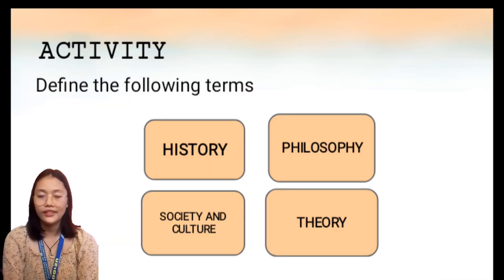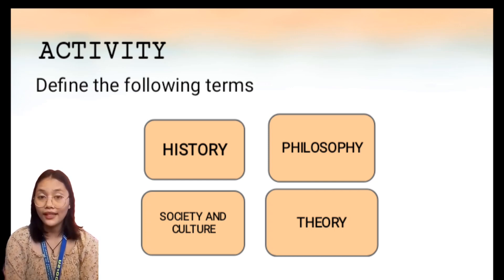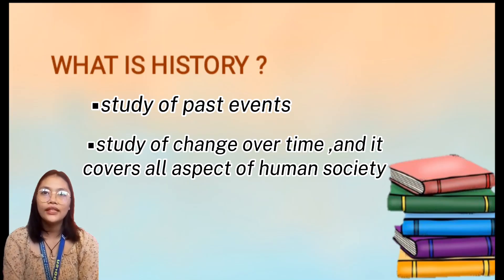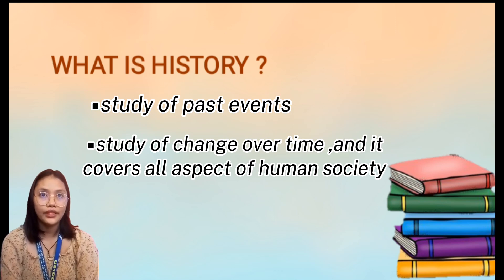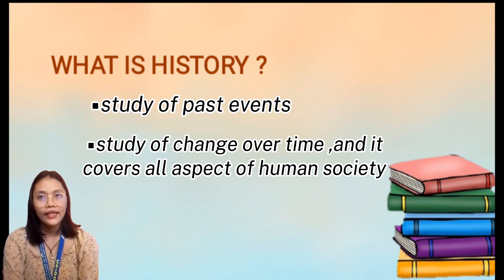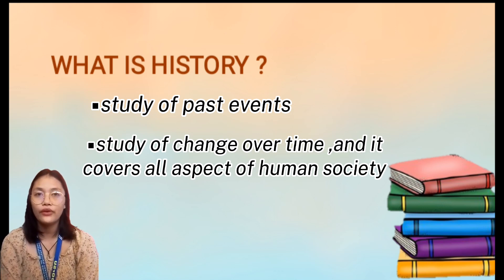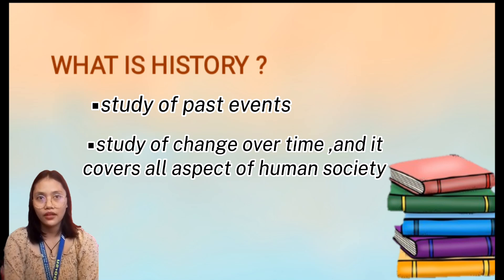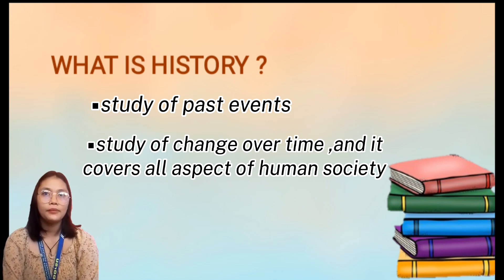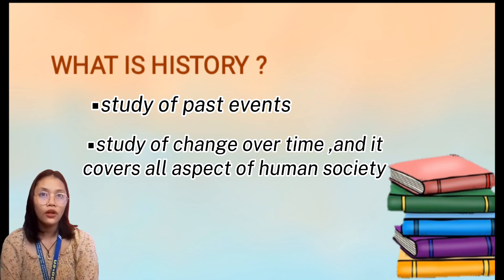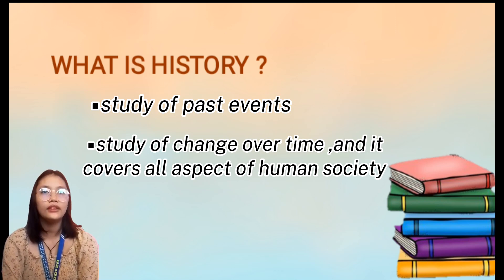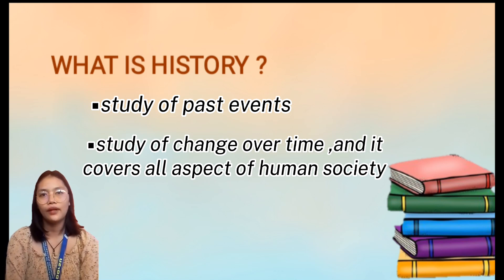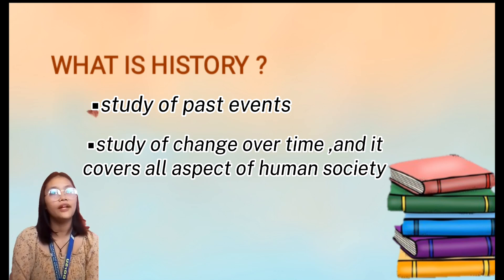Let's define the following terms. The first word is history. History is the study of past events, particularly in human affairs. History is the study of change over time and it covers all aspects of human society, including the political, social, economic, scientific, technological, medical, cultural, intellectual, religious, and military developments.